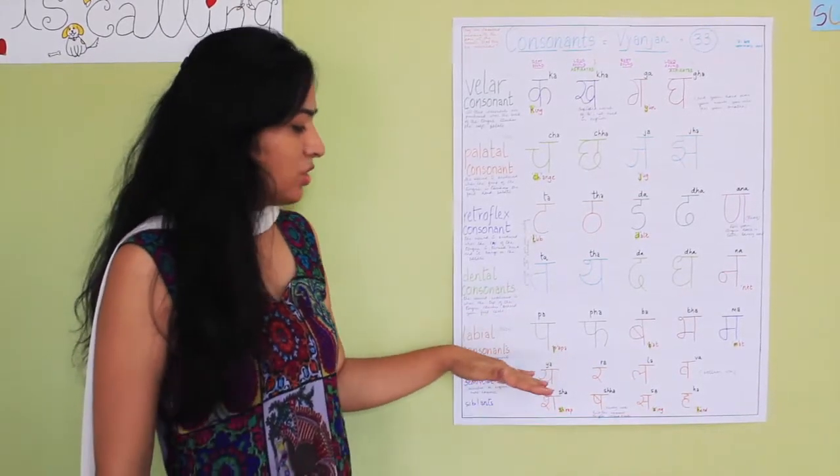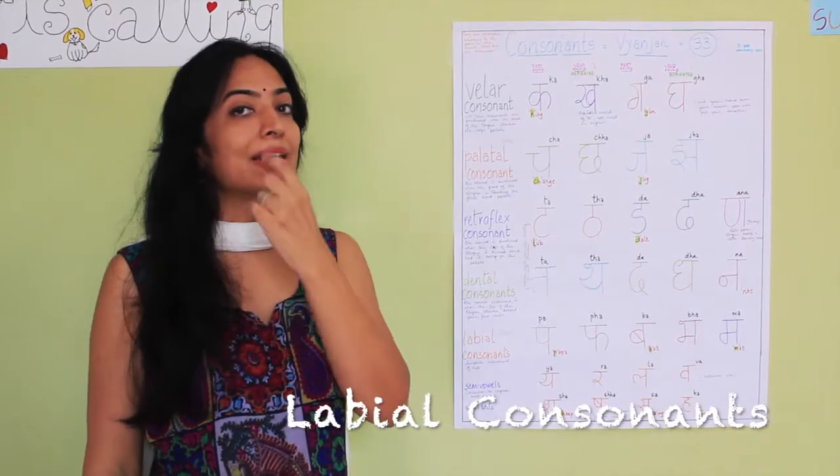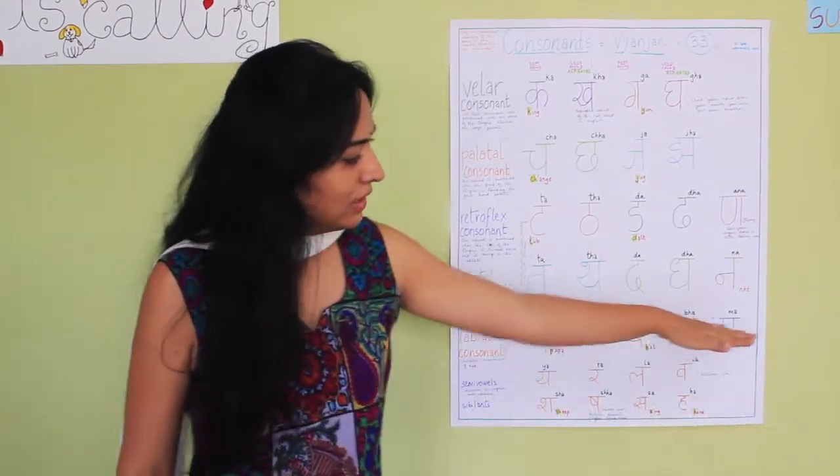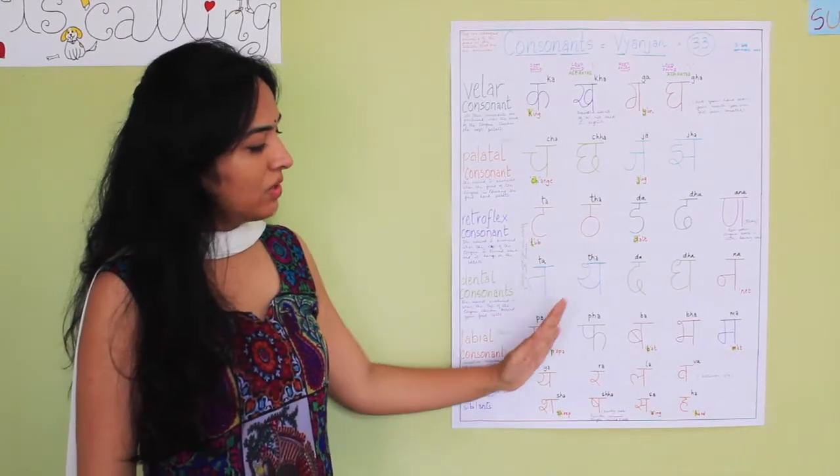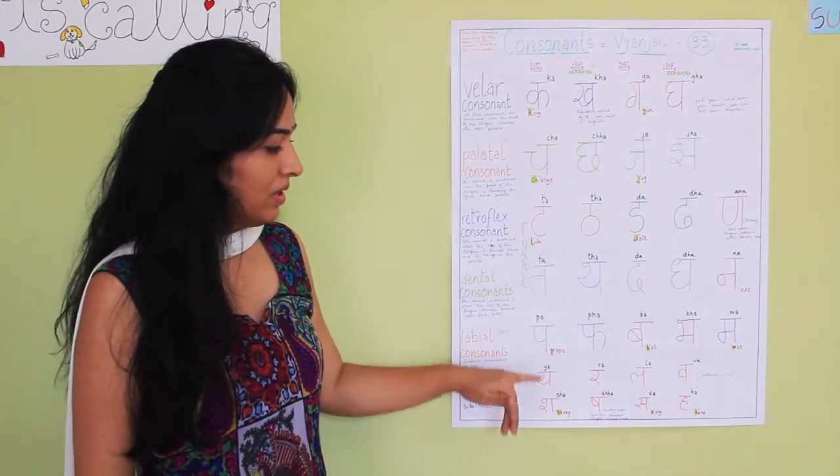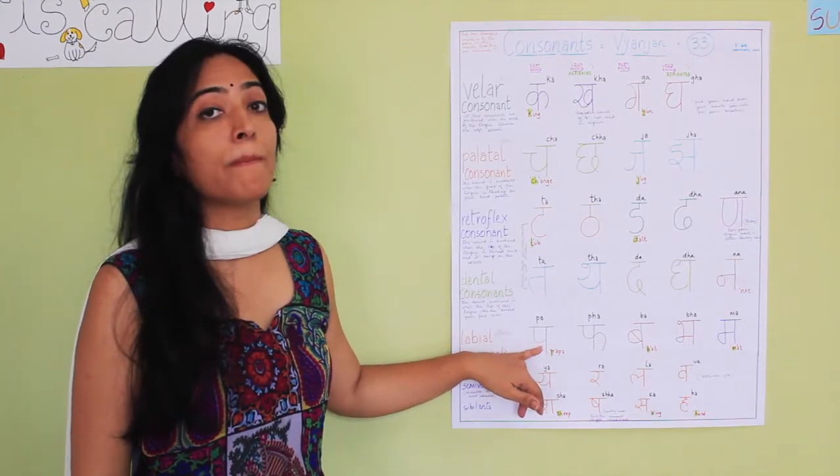We go ahead to the labial consonants. Now labial consonants involves the lip movements. Now this full row is going to involve your lip movements. One again the soft sound, one again the loud sound. Now this one is P. P, P, P from papa.